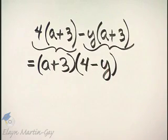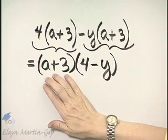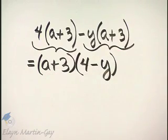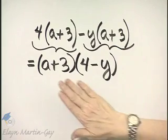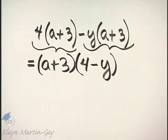And I have now written as a product. This is a plus 3 times 4 minus y. This factors no further. So number one, I've factored. And number two, no factor factors further. So I factored completely.